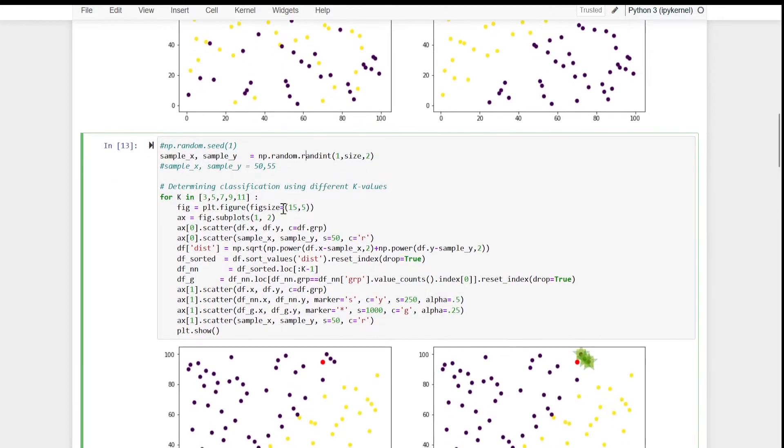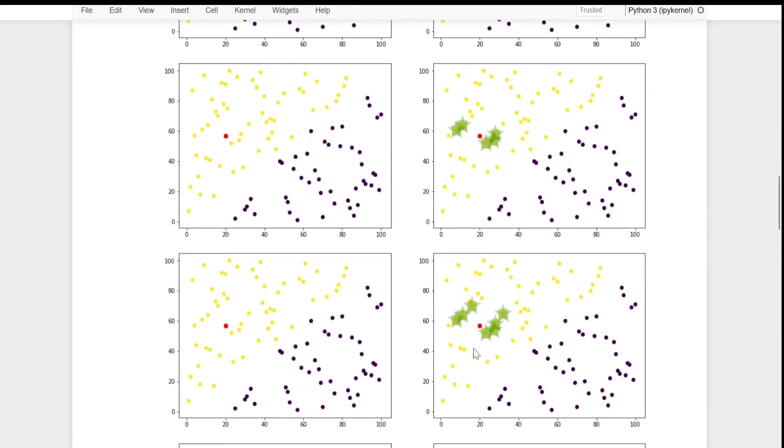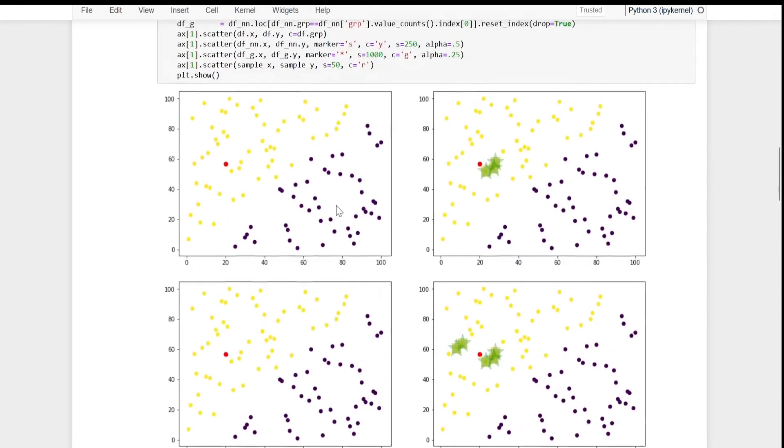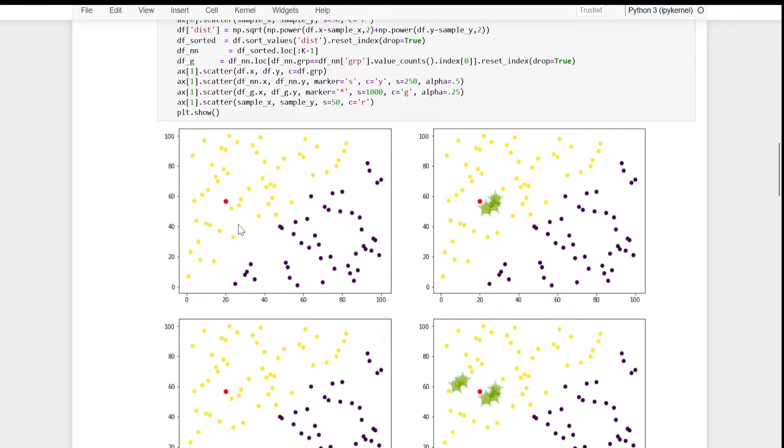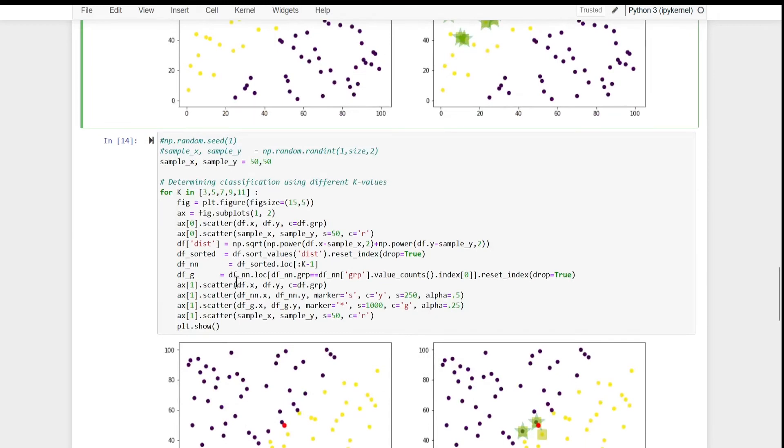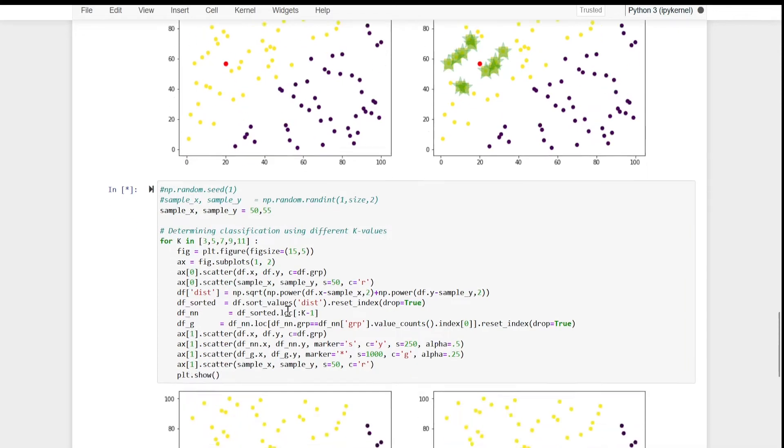So here, let us run this. This is 3, this is 5, 7, 9, 11. Absolutely no problem. Every time since our sample data point is here, every time all the neighbors are from yellow group. So there is absolutely no conflict, no issue. Assuming that, we will try to keep our sample data point over here, then what will happen? And that is going to be interesting. So let us copy this. We will try to keep somewhere here at the middle, maybe here 50 and 50. So let us remove this comment and comment this. And let us run this and just see. This is going to be interesting.